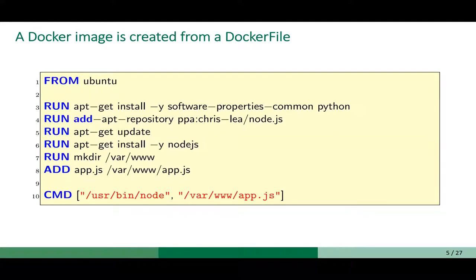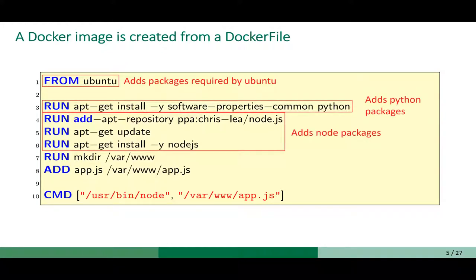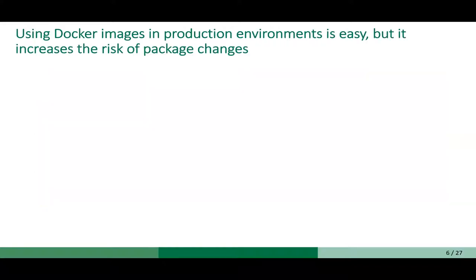Each Docker image is created from a Dockerfile. Here you can see a sample Dockerfile. In each image, there are multiple packages being added to it. For example, based on the operating system you are using for the image, it might add some specific packages. Or based on the languages you're installing or libraries that you want to use — for example, here we have Python libraries and Node.js that are being added to this image.